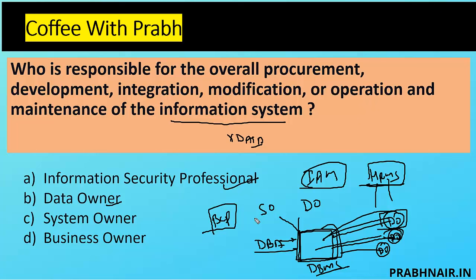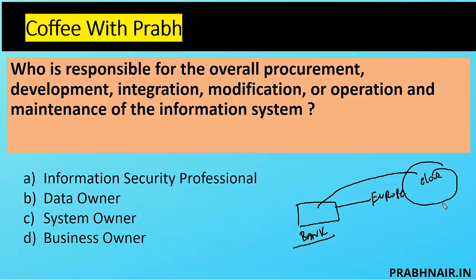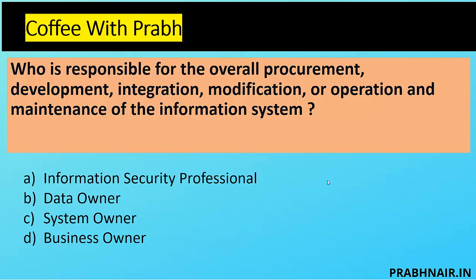The application architect and DBA head are called system owners — they build the overall system and are accountable for it. Examples of system owners include IAM systems, HRMS (where the HR head is the system owner), and BCP systems. In this question, we're talking about responsible for overall procurement, development, integration, modification, operation, and maintenance — even if you add 'security' as a keyword, the answer is still system owner. Business owner is eliminated because he is accountable for his specific business. One more example: if I'm a bank moving operations to the cloud, AWS or Azure is the system owner and the bank is the data owner.